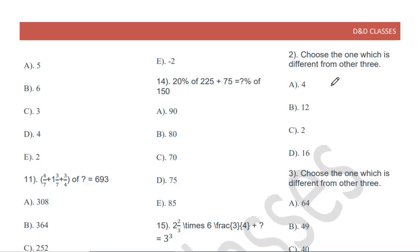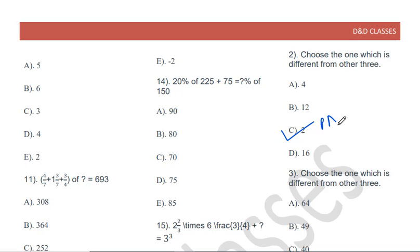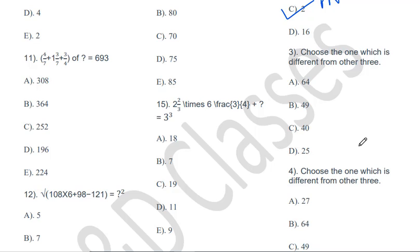Choose the one which is different from the other three: 4, 12, 2, 16. The answer will be 2. Why? Because 2 is a prime number and the rest — 4, 12, and 16 — are all composite numbers.